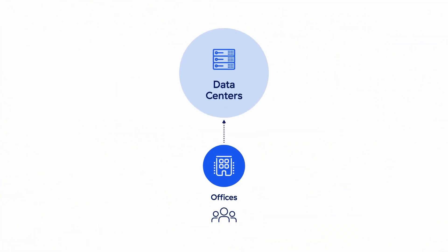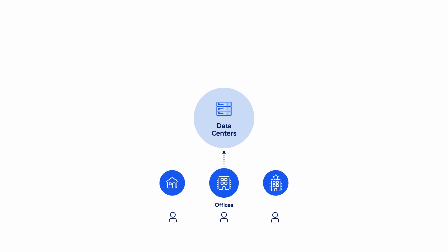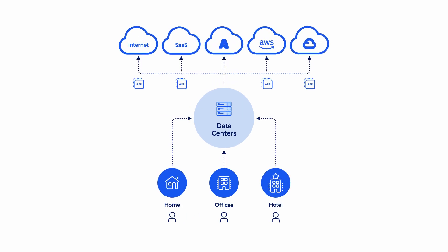The way we work has completely changed. Your apps are no longer in your data centers and users are no longer in the office. Traditional WAN architectures, with their hub-and-spoke approach, introduce unnecessary latency, create performance bottlenecks, and impair digital experience for your end users. While SD-WAN reduces network cost and simplifies WAN and enables local internet breakout management, it inherits some of the problems associated with VPNs.